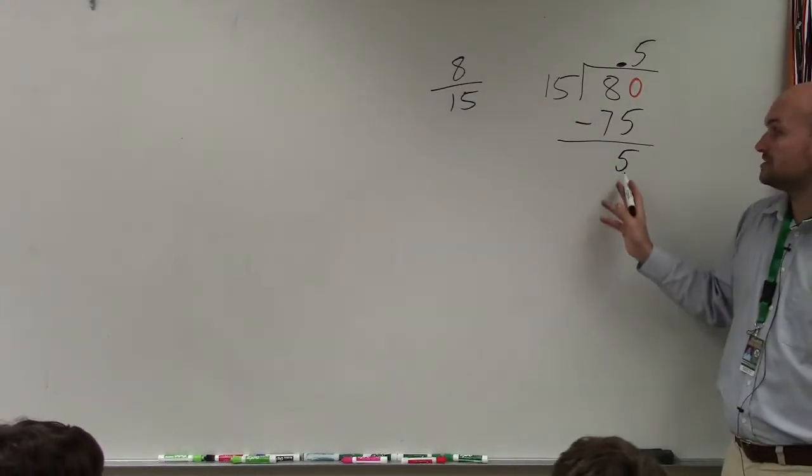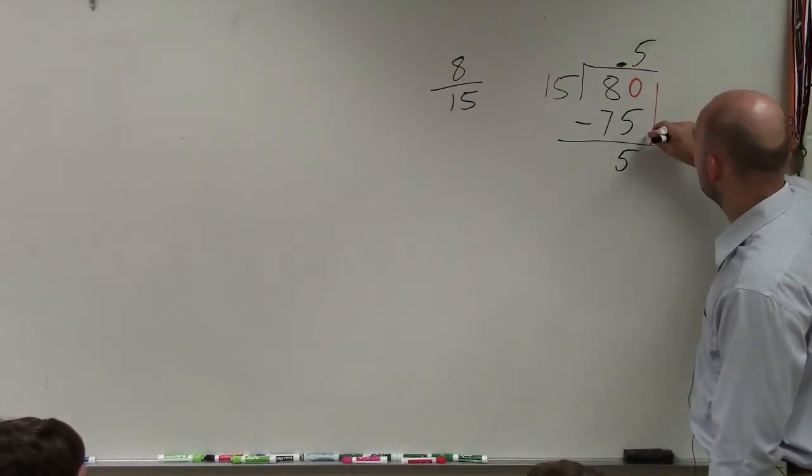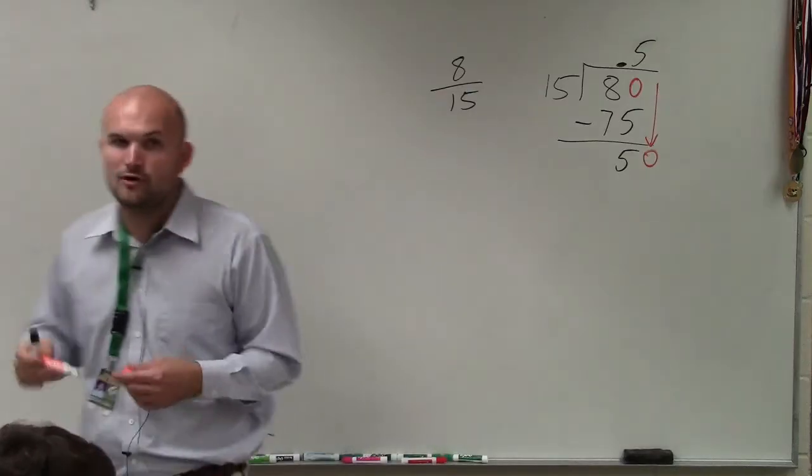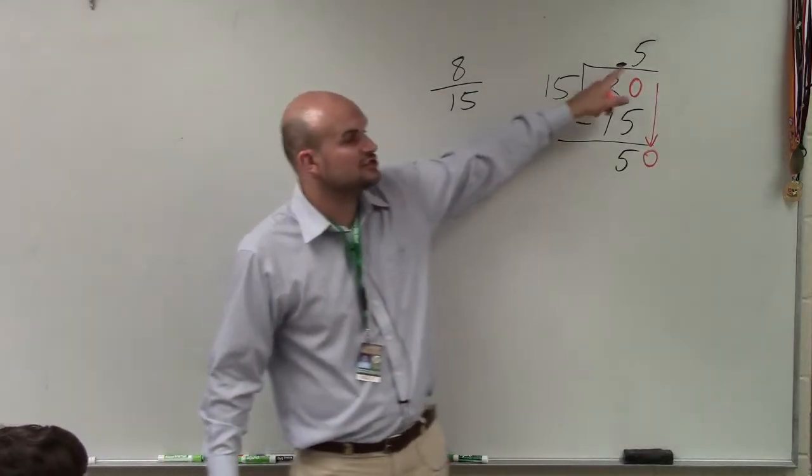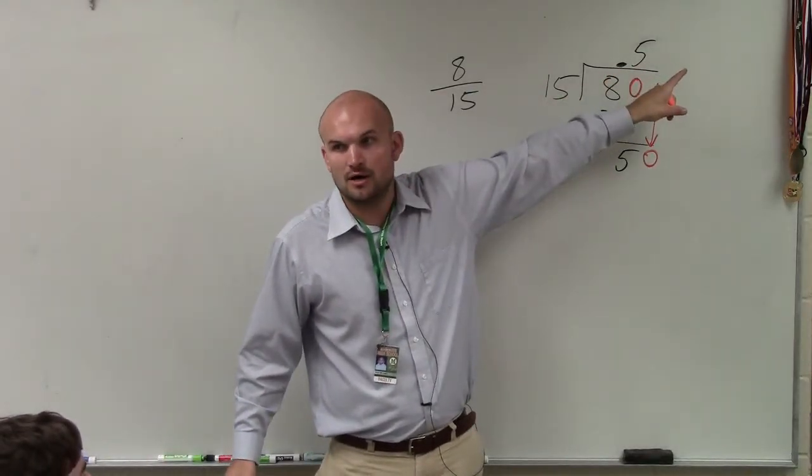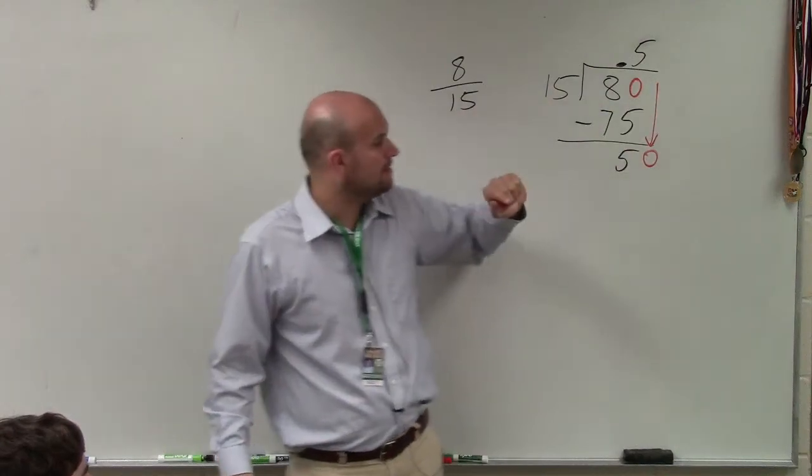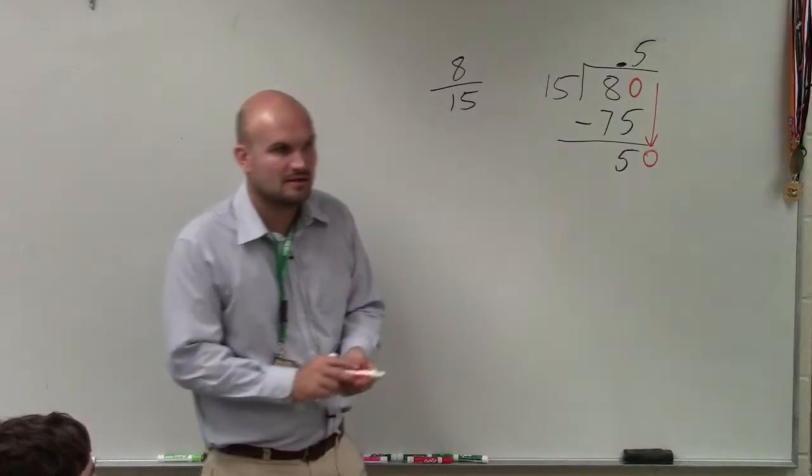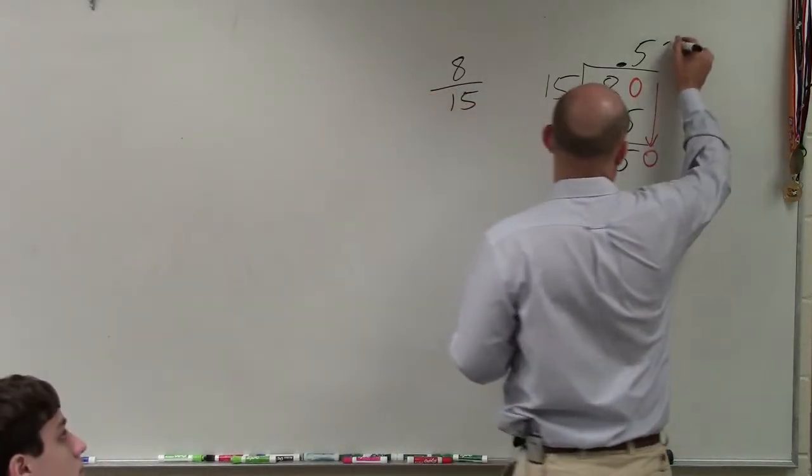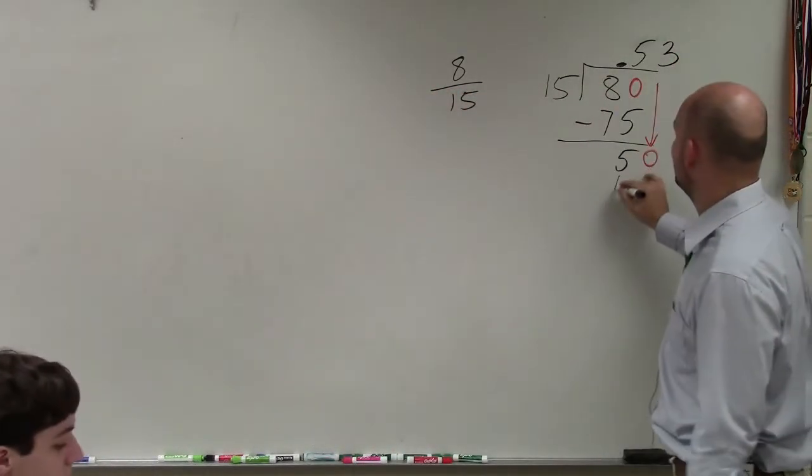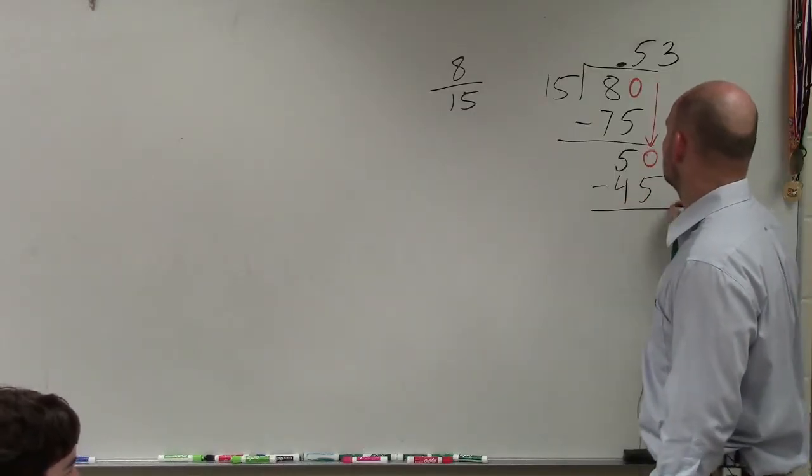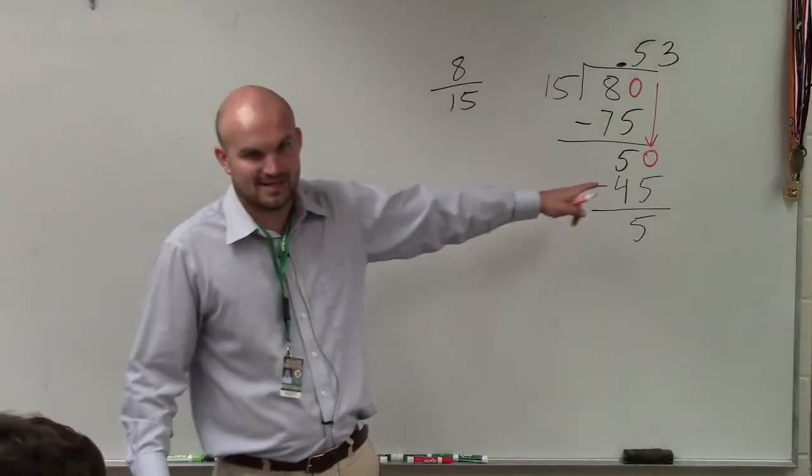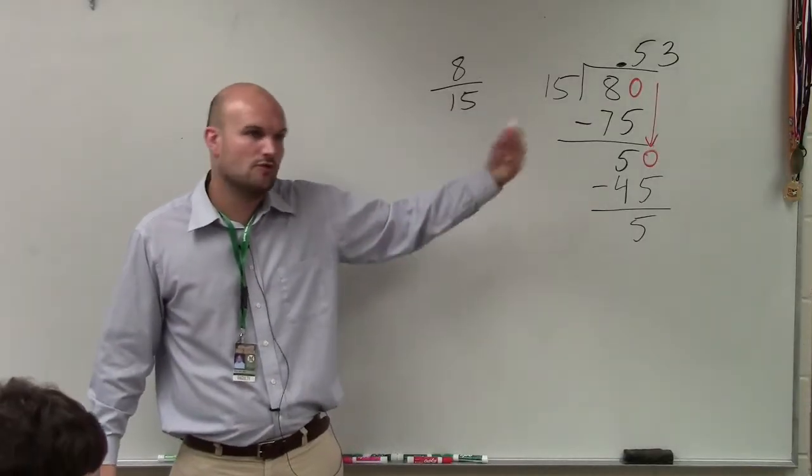15, though, does not divide into 5, so we bring down another 0. And again, you guys can repeat this process over and over. I only need you to repeat it to two decimal places, which would be the 100th position. So 15, does that divide into 50? Not evenly, but how many times does it divide into 50? Three. Three times 15 is 45, subtract 5, and hopefully you guys would understand that this is going to be a repeating decimal. It's just going to keep on continuing over and over and over again.